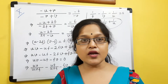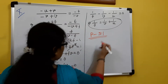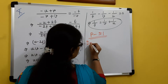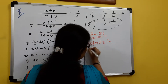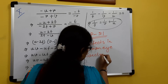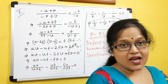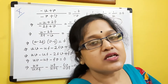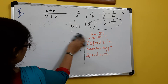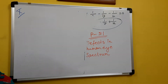The topic I am doing is defects in human eye. Our eye is a form of biological lens — it is in the form of a convex lens. Our eye is just like a convex lens, and that convex lens is surrounded by ciliary muscles. Various ciliary muscles are surrounding this convex lens.